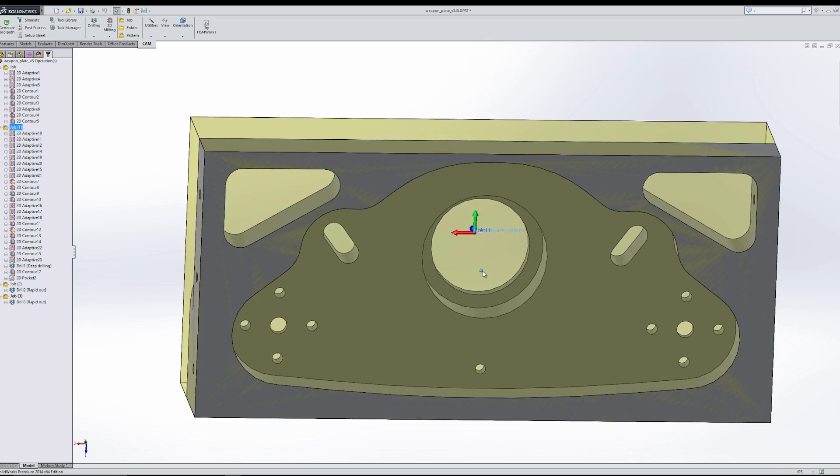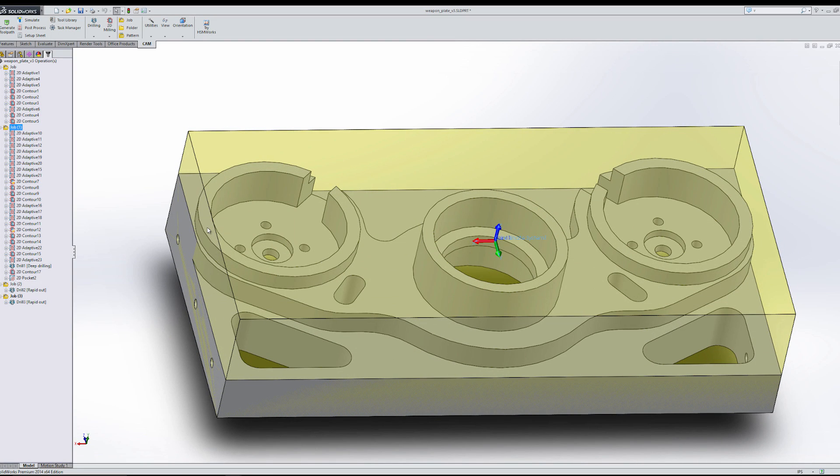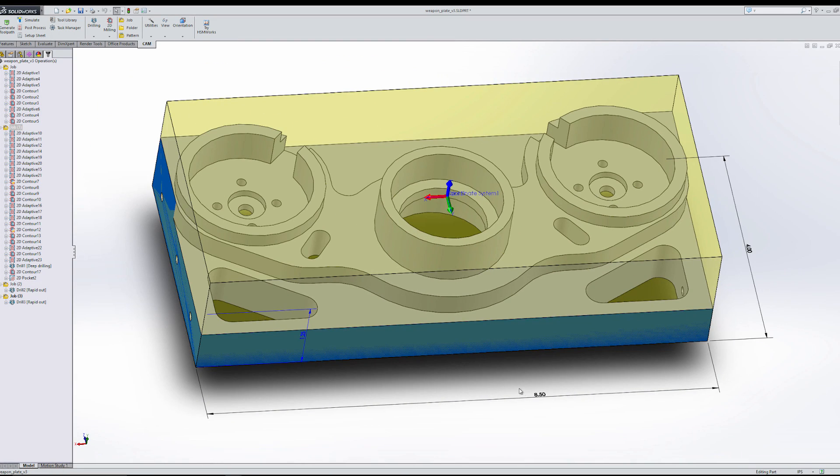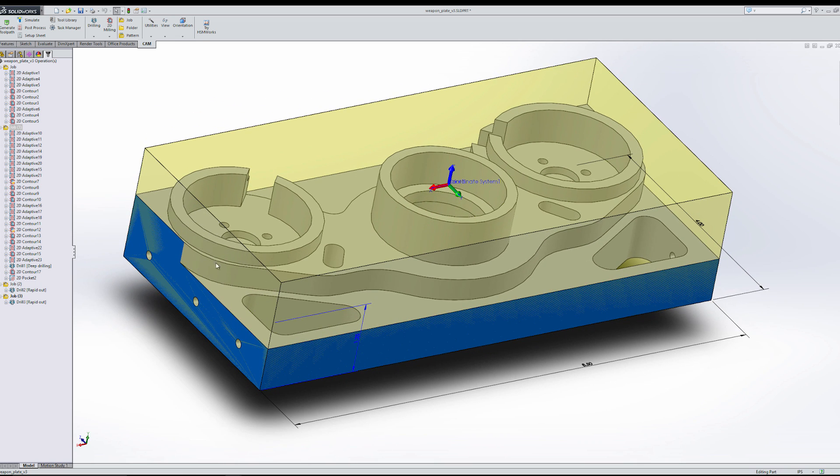So the first thing I need to do is cut this down to length. And since this is 8.5 inches long, it's a little too long for my mill. Although the mill travel is 10 inches, it's also really tall. So I don't have an end mill that's just going to take off these ends. So I have a different way of doing that.